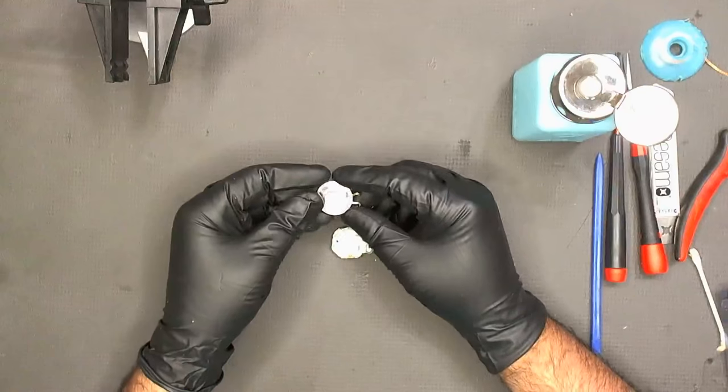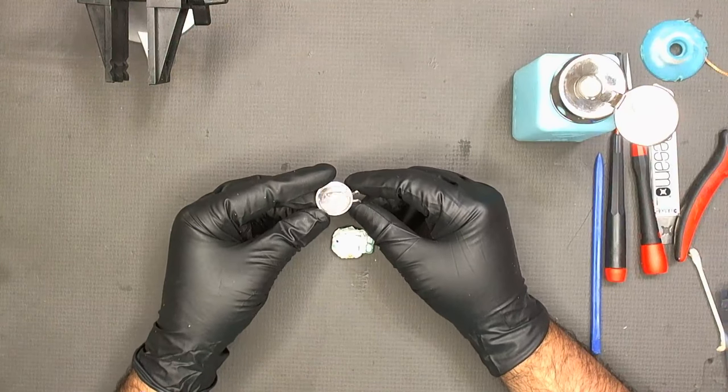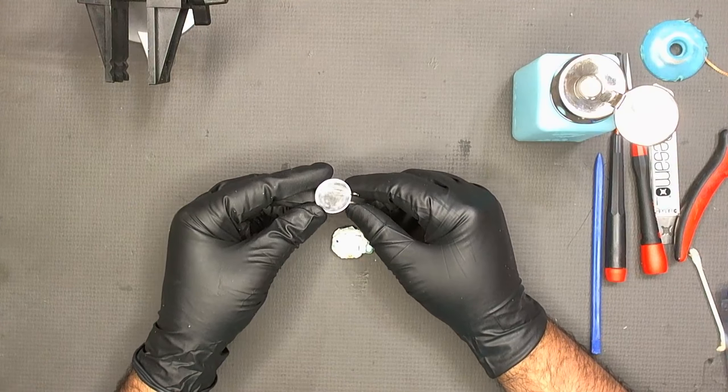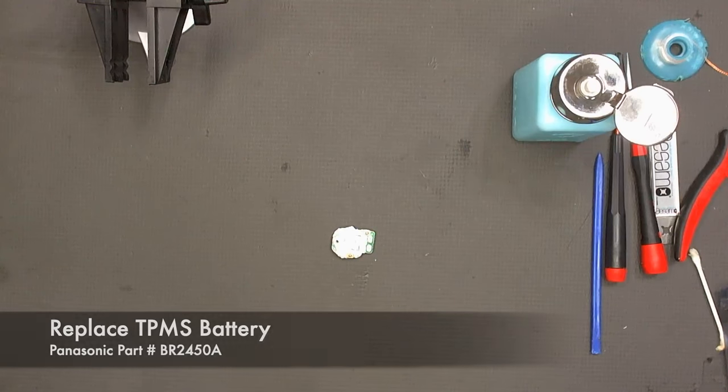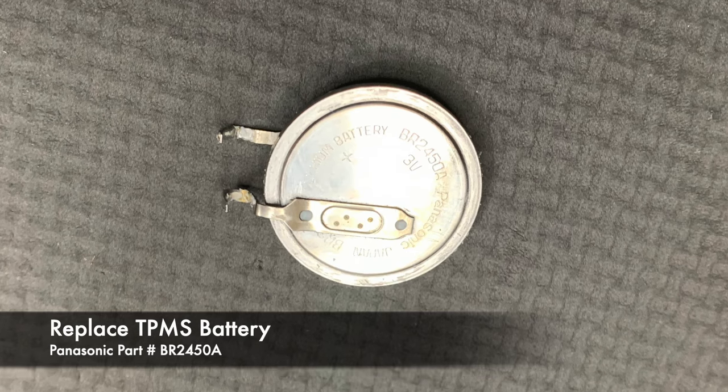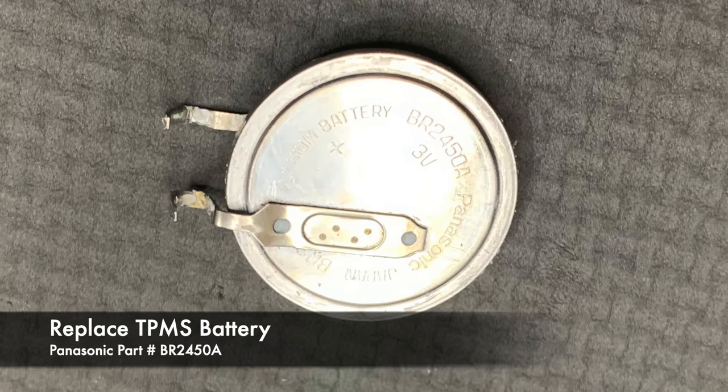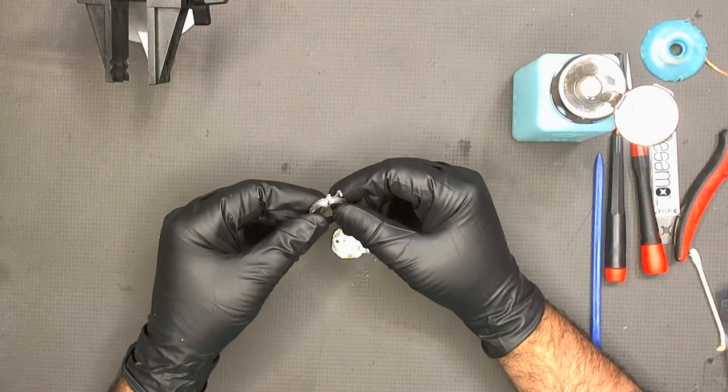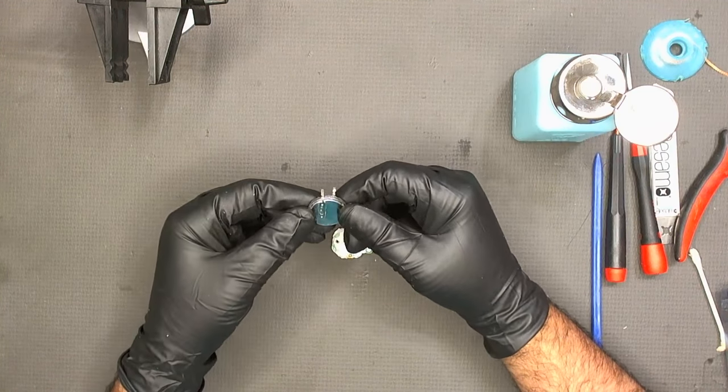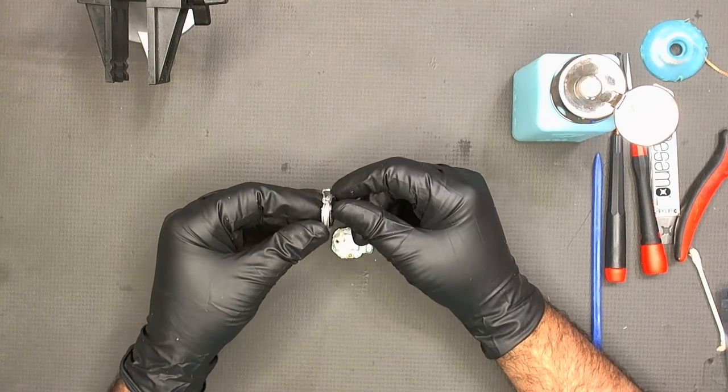I have further cleaned off the battery off camera so that I can show you the part number that you need. It's part number BR2450A. And I'll leave a link in the description where you can buy it. You can buy it from eBay. It's fairly common.